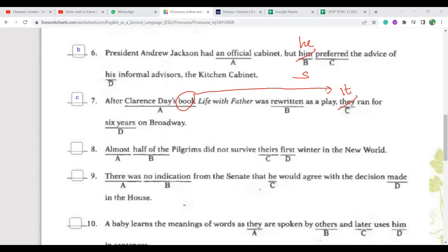We can go to number eight. C is wrong, it should be there. Correct, there without S because this, there's first winter behind it, the possessive adjective we're looking for. So almost half of the pilgrims did not survive their first winter in the New World. So almost half of the pilgrims could not survive their first winter in the New World. New World means America. Pilgrim means immigrant, American immigrant. Clear for this? Number eight is clear.